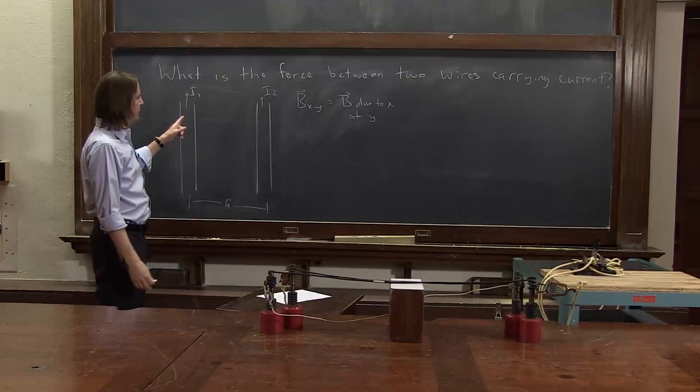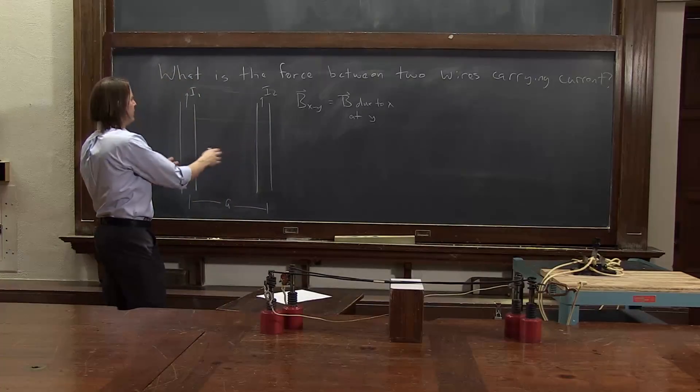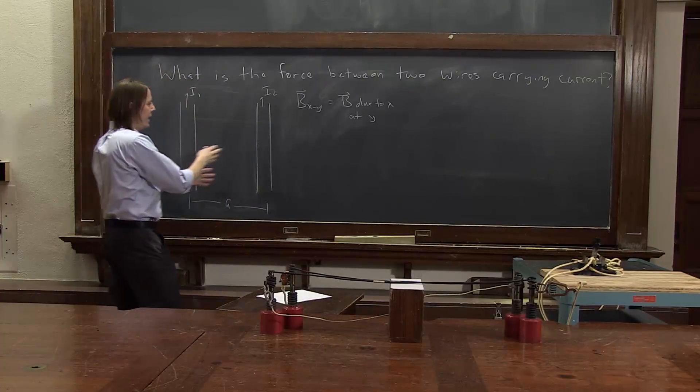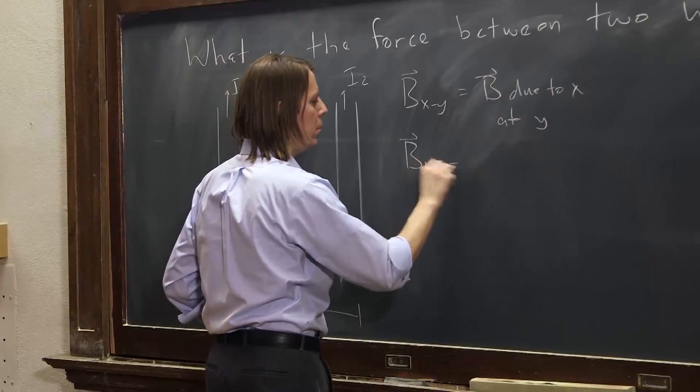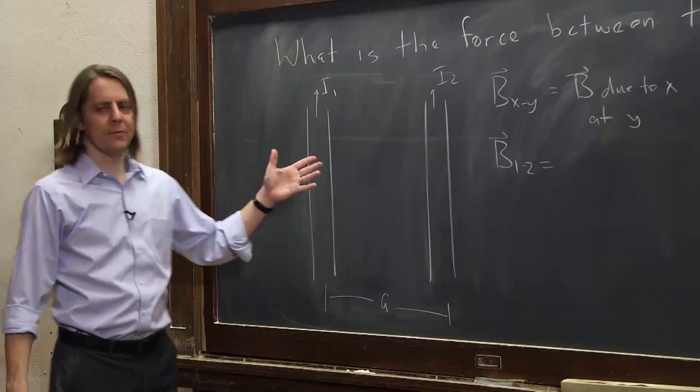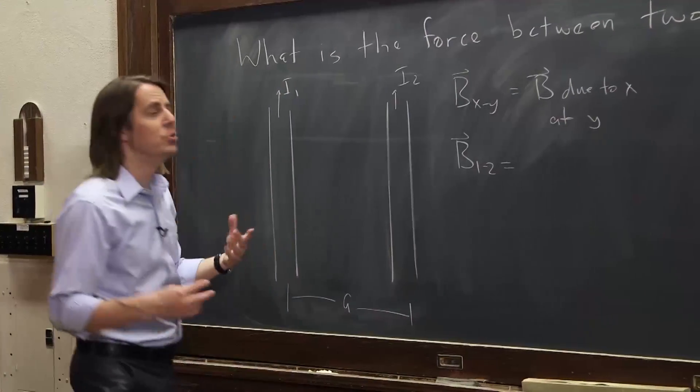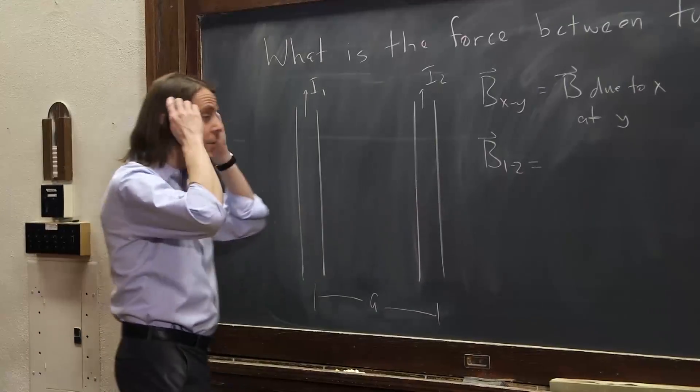Okay, so the first one we should calculate is what is B12? What is the magnetic field created by 1 at the position of 2? Well, we know it's a magnetic field due to a wire. We know that's mu naught I over 2 pi r, where r is the radius away.